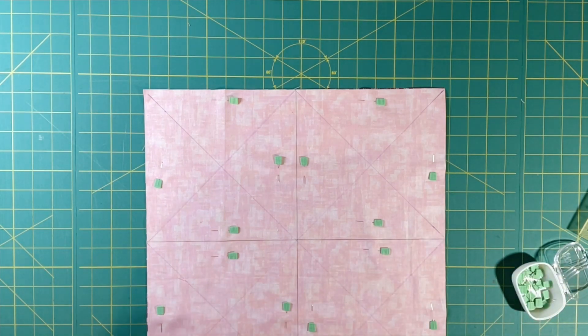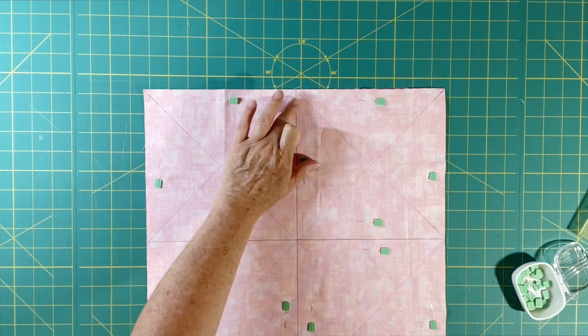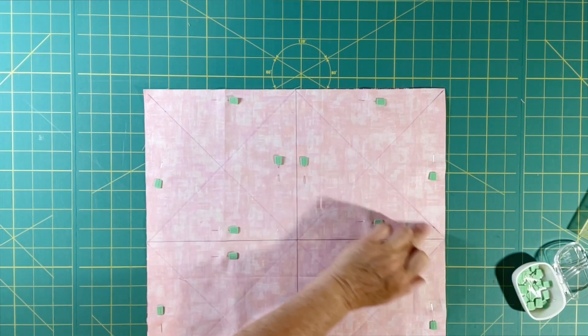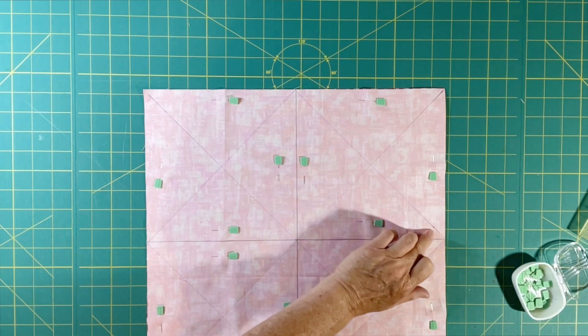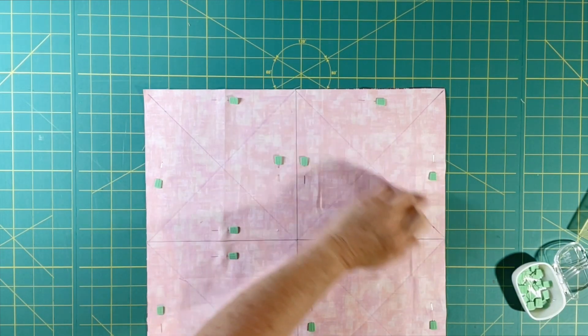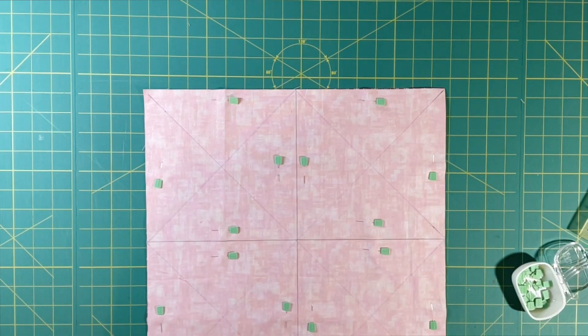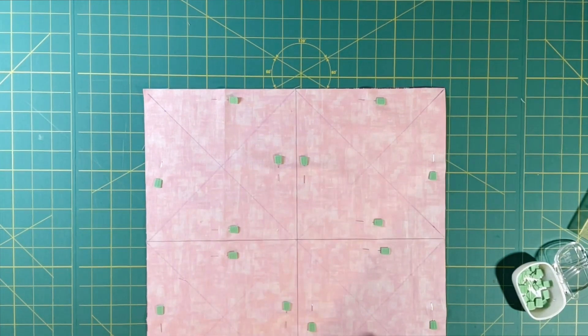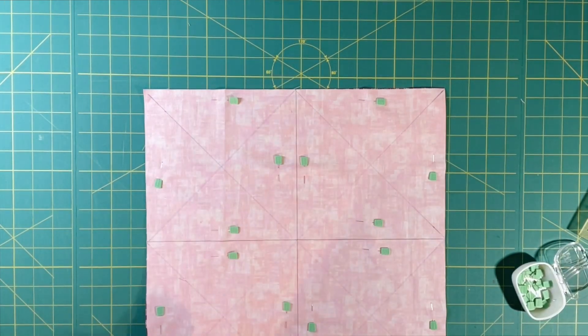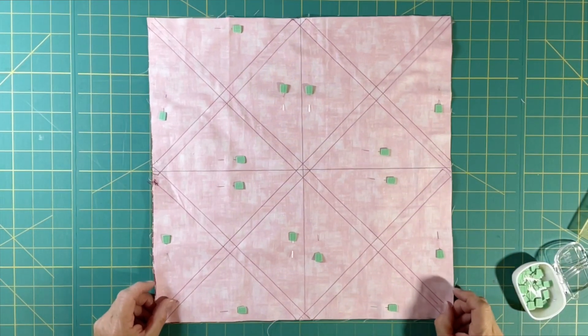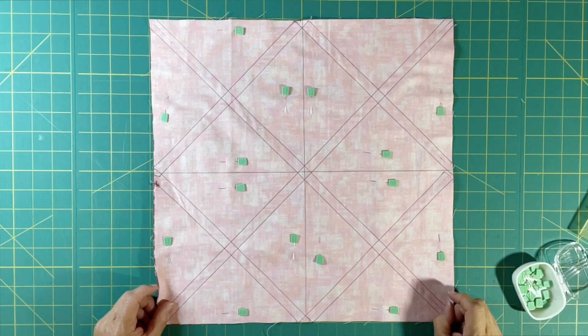Okay, so now I'm going to sew on both sides of the drawn diagonal lines a quarter inch away from that line on this side and on this side on all of my diagonal lines. Should have three going this way and three going this way. I'll be right back.